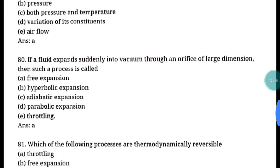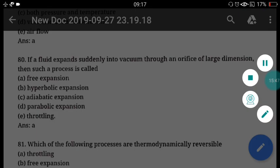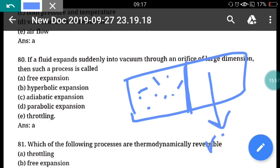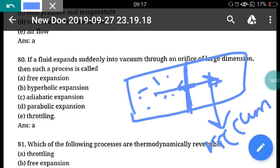Question 80: If a fluid expands suddenly into vacuum through an orifice of large dimension, that process is called free expansion. In this scenario, a container has gas on one side and vacuum on the other; when a hole or orifice is made in the partition, the gas expands into the vacuum — that is free expansion. Correct answer is option A.